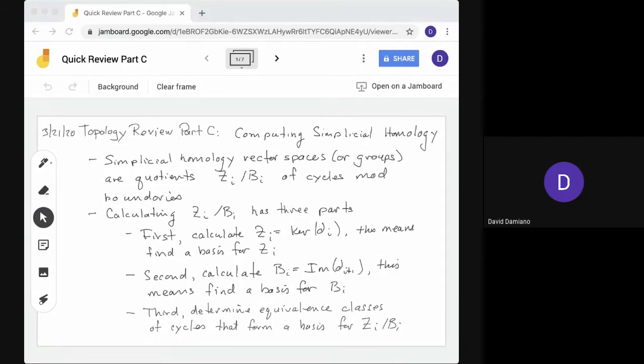Hi. This is Topology Review Part C, Computing Simplicial Homology. Simplicial homology are vector spaces or groups of quotients zi mod bi, so we say cycles mod boundaries. To calculate homology, zi mod bi, we have to do three things.